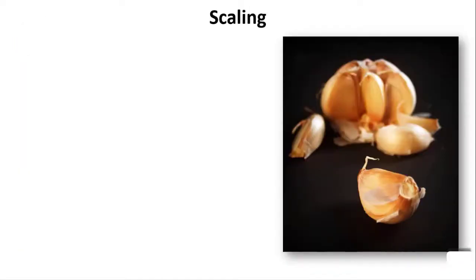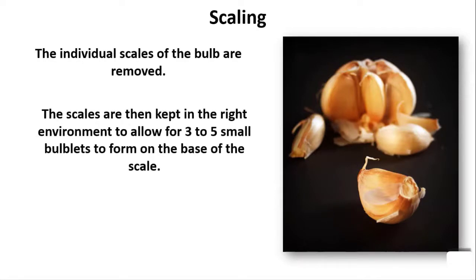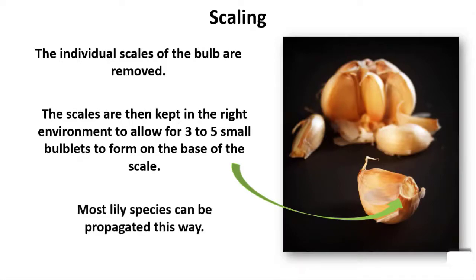Scaling. When scaling, the individual scales of the bulb are removed. The scales are then kept in the right environment to allow for three to five small bulblets to form on the base of the scale. Most lily species can be propagated this way.